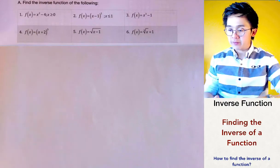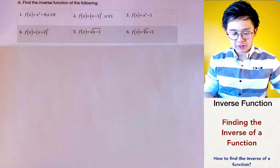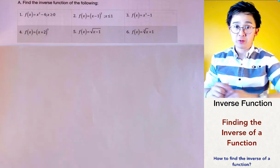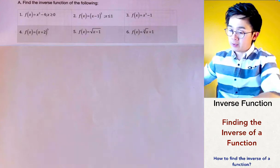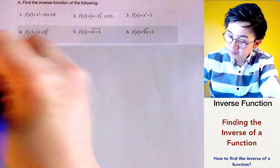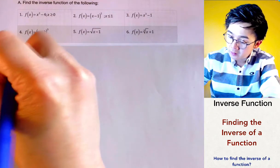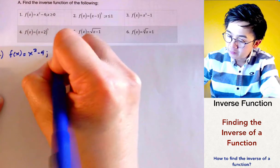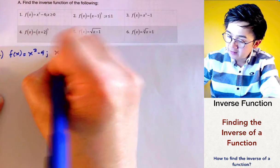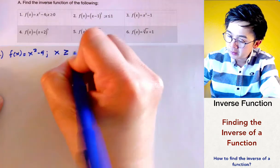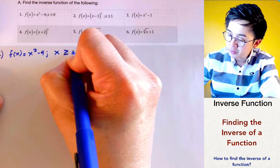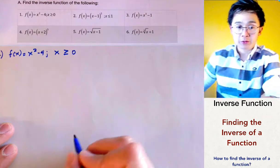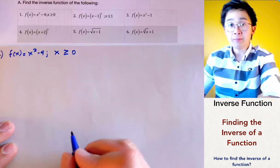Now we're going to be working on finding the inverse of a given function using algebra. For problem number one, we're going to write out f(x) = x² - 4, and the restriction is that our domain should be all numbers greater than or equal to 0, or positive numbers.